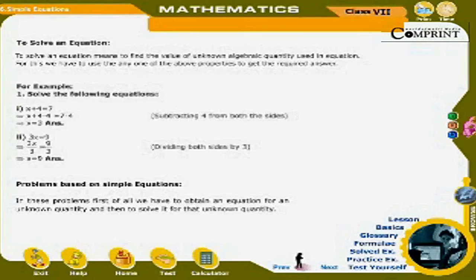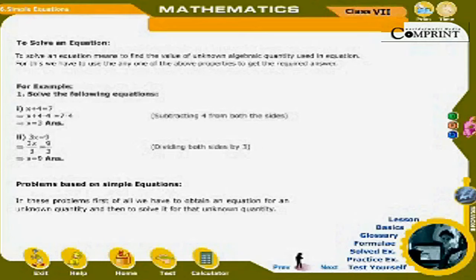Solve the following equations. First: x + 4 = 7, which implies x + 4 − 4 = 7 − 4, subtracting 4 from both sides, which gives x = 3. Second: 3x = 9 implies 3x ÷ 3 = 9 ÷ 3, dividing both sides by 3, which gives x = 3.